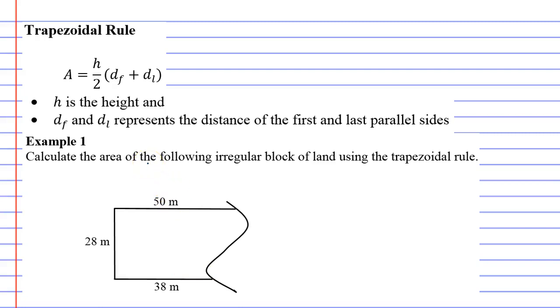We're calculating the area of a block of land because a block of land doesn't always have straight edges. For the trapezoidal rule, you're only allowed one of the edges to be irregular.